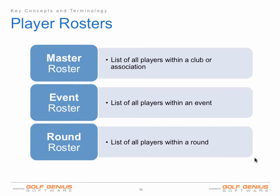Now let's talk about the different kinds of player rosters. There are three different levels of player rosters. You have the master roster, which is the golden list of players in your account. For our club customers, this would be your membership roster. For golf associations and tours, this would be your membership of your golf association or tour. The event roster is a list of all players within a specific event. Within that specific event, there may be one or more rounds, and within each round there is a round roster.